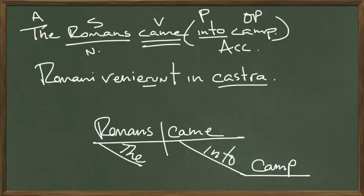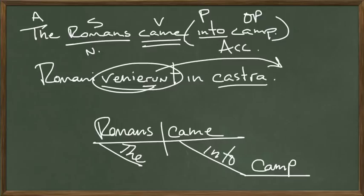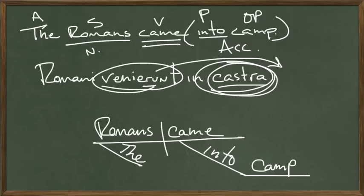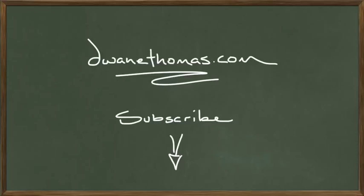We can put this in proper Roman order by switching venerunt to the end: Romani in castra venerunt. Castra is where we get so many English cities that have 'Chester' in them — there's the city of Chester, Manchester, Dorchester, Winchester. All those cities in England with 'Chester' at the end are old Roman camps, which I personally find fascinating. It comes from the word castra. Well, that's it for today. Check out DwayneThomas.com for more on Greek, Latin, and English connections, and subscribe below to the YouTube channel.